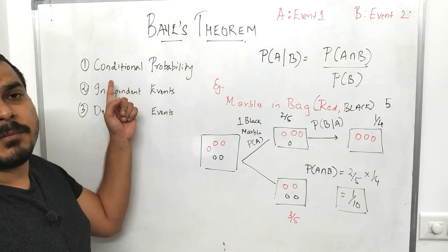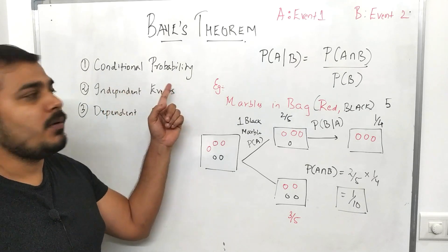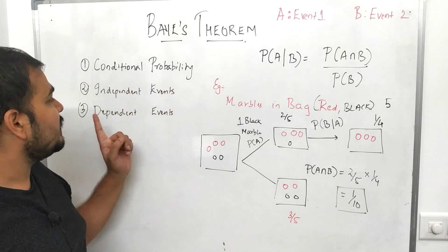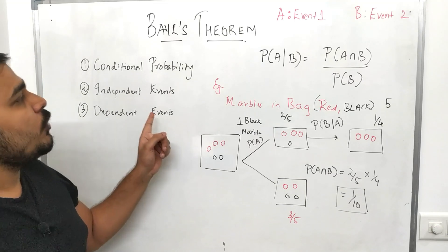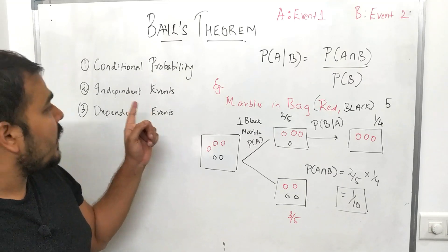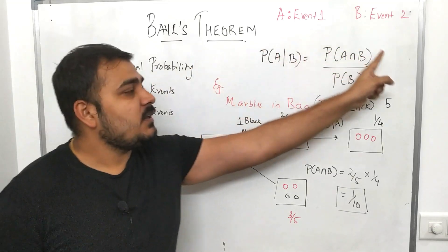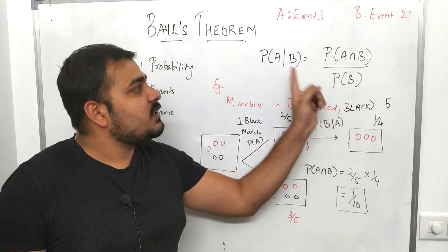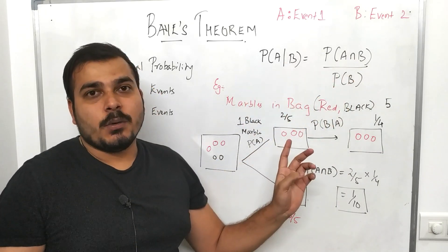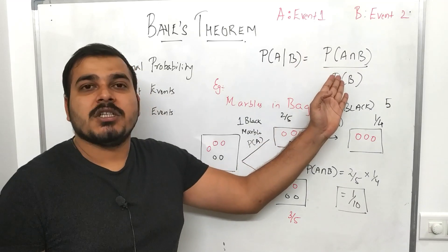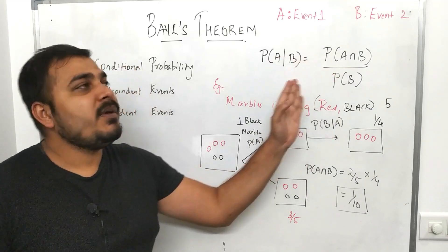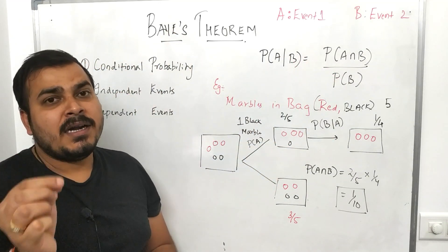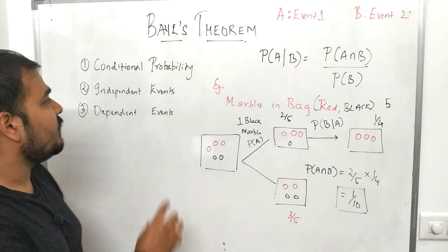In this video we are first going to discuss conditional probability, then independent events and dependent events. I'll share an example and this is basically the formula of conditional probability. We need to understand this equation because based on it we will be able to derive Bayes theorem.